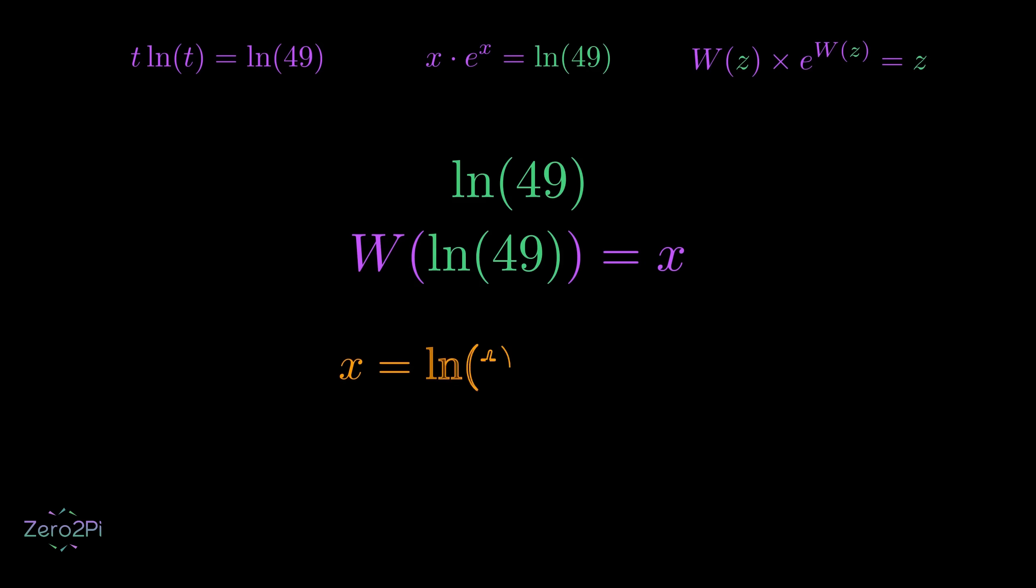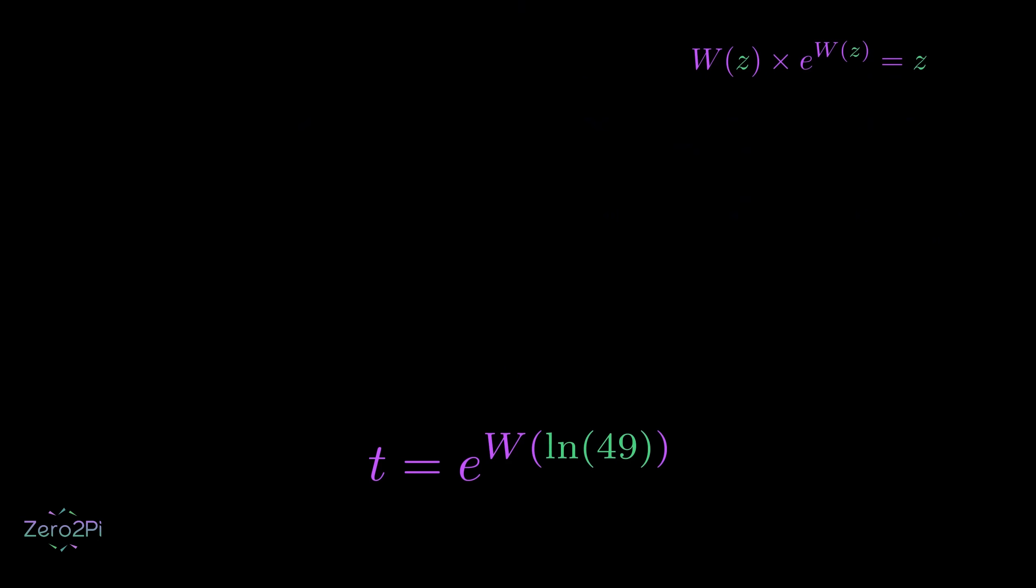And since x equals natural log of t, and t equals e to the x, we can now write t equals e to the power of W of natural log of 49. And that's it. We've found our solution.